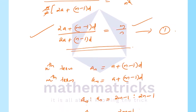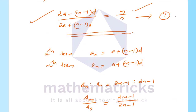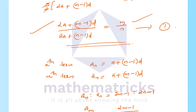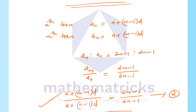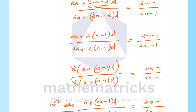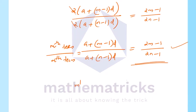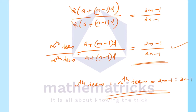We have now shown that 2m minus 1 to 2n minus 1 holds, which is equation 2 — the required result. The remaining questions will be covered in the next session. Thank you.